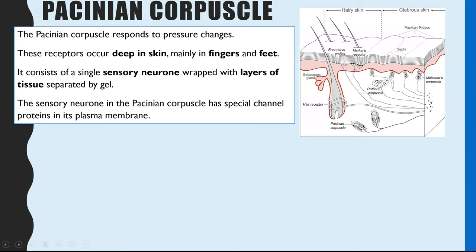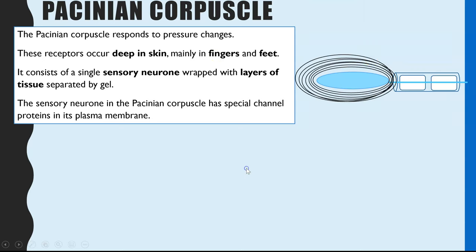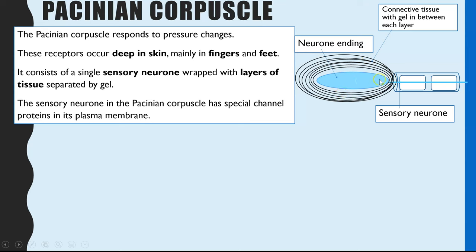Looking at the Pacinian corpuscle and how it results in sodium ions moving into the neuron to generate an action potential: the stimulus it responds to is pressure. These are mainly found very deep down in the layers of the skin — we can see that here — and most of them are found in your fingers and feet. What it's made up of is a sensory neuron, shown here in blue, wrapped in layers and layers of connective tissue with a viscous gel in between each layer.